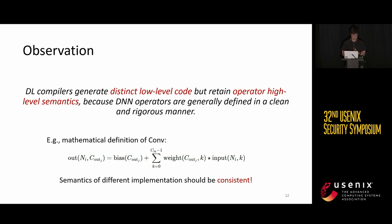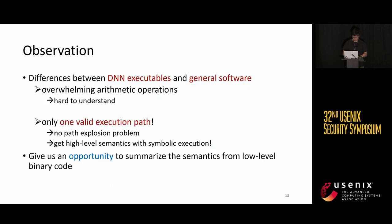DNN operators are generally defined in a clean and rigorous manner. No matter what deep learning compilers are used and what the model structure is, the semantics of a convolutional operator should always be the same. This means deep learning compilers may generate distinct low-level binary code but always retain the high-level operator semantics consistently. Furthermore, one major difference between a DNN executable and general software is that a DNN executable has only one valid execution path — no matter what the input is, the DNN executable will perform the same computation. This gives us an opportunity to summarize the high-level semantics from low-level code with symbolic execution, because there is no path explosion problem.